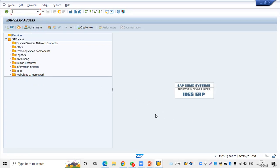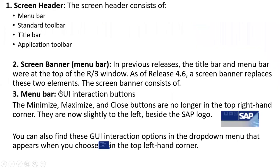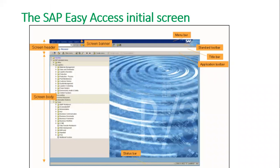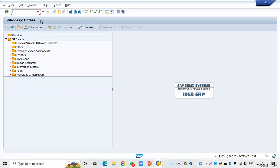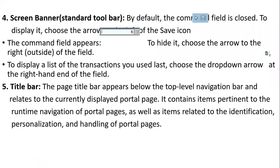The title bar - for example 'SAP Easy Access' - displays the title of the current screen. The title bar appears below the top-level navigation bar and relates to the currently displayed portal page. It contains items pertaining to the runtime navigation of the portal pages, as well as items related to identification, personalization, and the handling of portal pages.